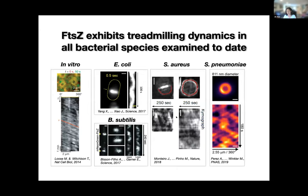One feature of treadmilling is that the leading edge polymerization rate has to, on average, equal the speed of depolymerization at the trailing edge, so that you end up in a steady state — otherwise your polymer would continuously grow or continuously shrink. We discovered this in 2017, and almost simultaneously it was also discovered in other bacteria species. We know this is a very universal phenomenon in all these bacteria cells because FtsZ is highly conserved. This is only related to FtsZ's GTPase activity — nothing else changed the treadmilling speed except for GTP hydrolysis.